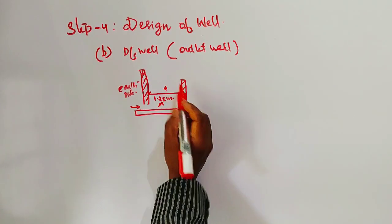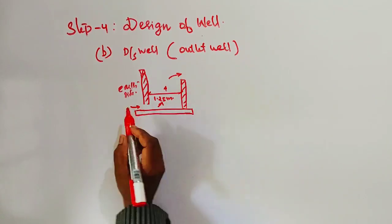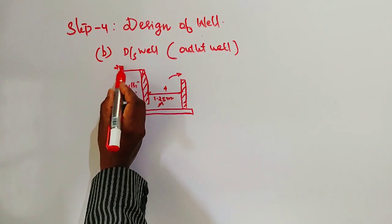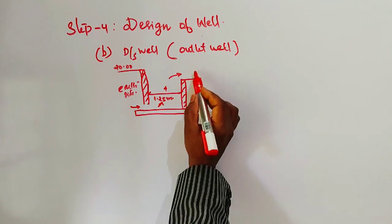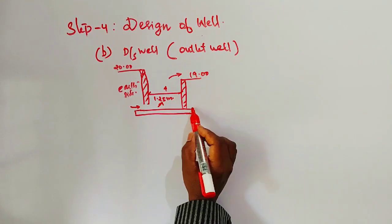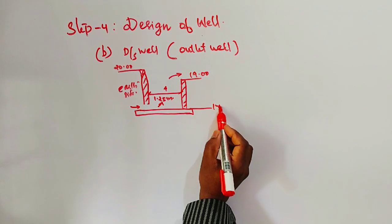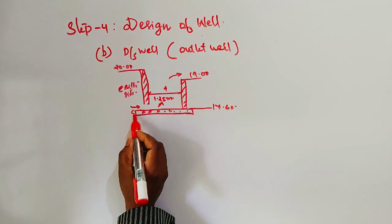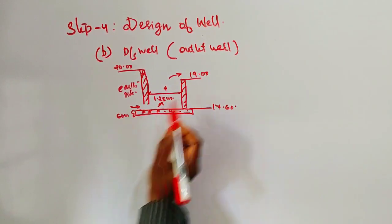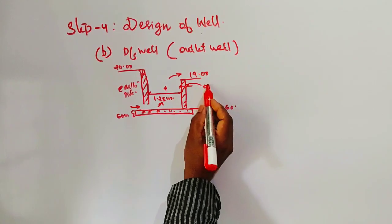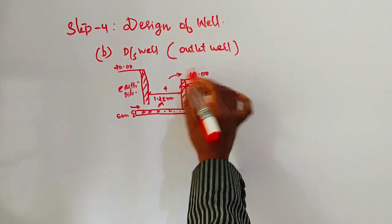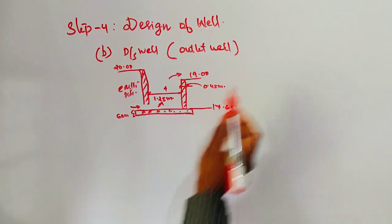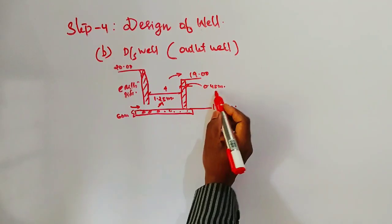Outlet well reservoir, downstream water level: top level is 20, bottom level is 19, foundation level is 17.6. Foundation in the inlet is 60 centimeters thickness. Wall thickness 45 centimeters, 0.45 meters. Provide appropriate height, wall thickness, and foundation for the downstream well.